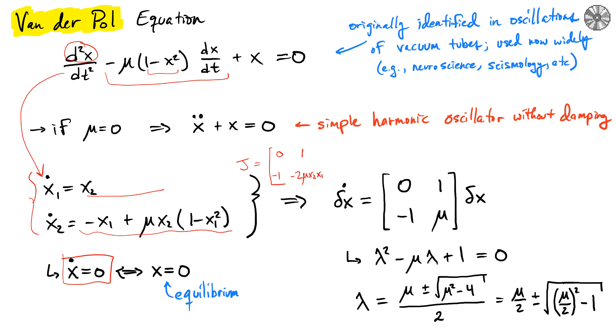Then you're going to get the derivative with respect to x₂, which gives you this term μ times (1 - x₁²). That's the general Jacobian, and then we simplify that when x₁ and x₂ are both zero, which gives us this Jacobian at the origin.